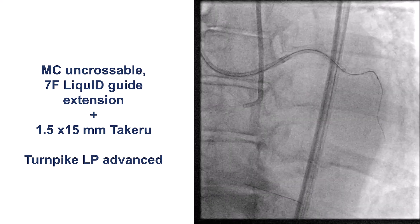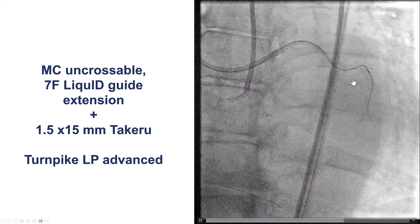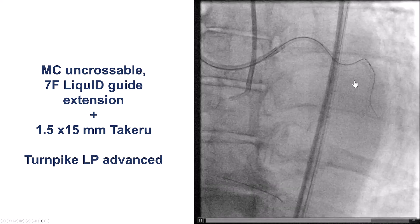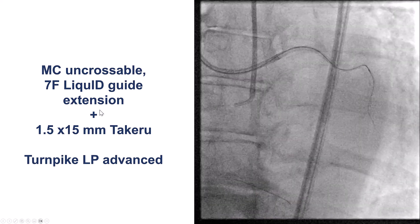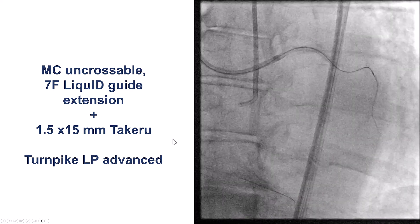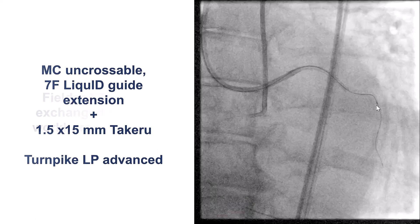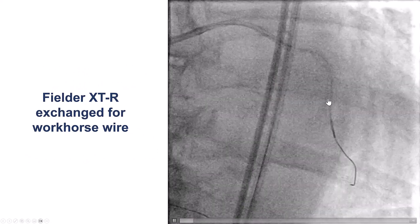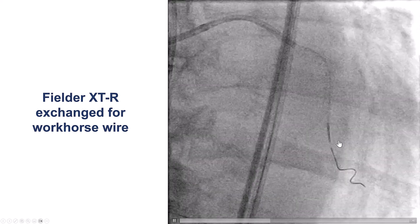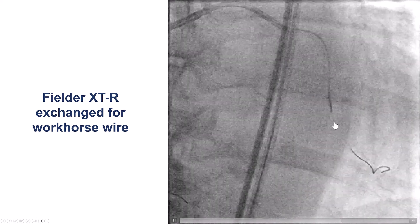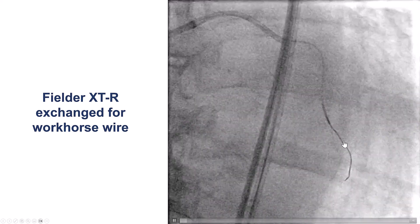We still had a lot of work to do. We could not advance the microcatheter, so we used a 7 French Guidezilla extension with a Takeru balloon, and were eventually able to advance the Turnpike LP all the way into the obtuse marginal, and then exchange the Fielder XTR for a workhorse guidewire.